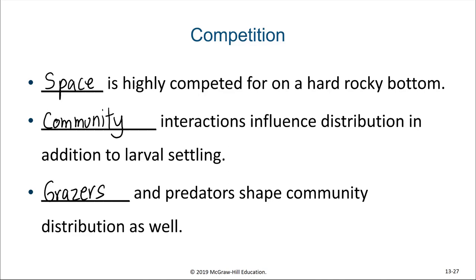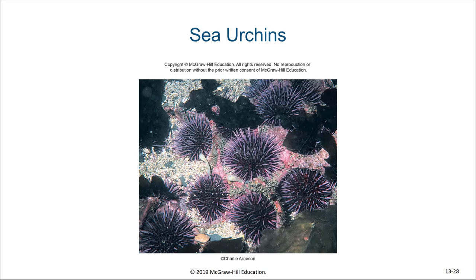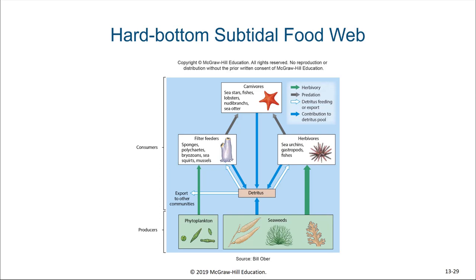Sea urchins are one of the main grazers on hard rocky bottom communities. There will be a greater amount of seaweed growing because of the presence of hard substrate and a greater number of herbivores feeding directly on the seaweeds or on detritus as well. Phytoplankton will also be abundant and the filter feeders will be able to feed both on the phytoplankton and on the detritus. The carnivores, in turn, feed on these primary consumers.